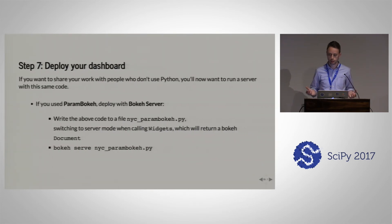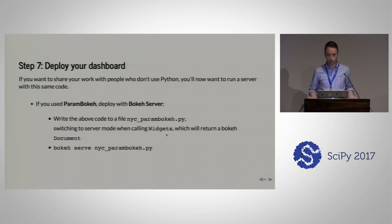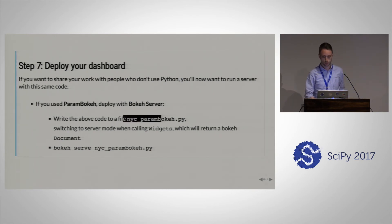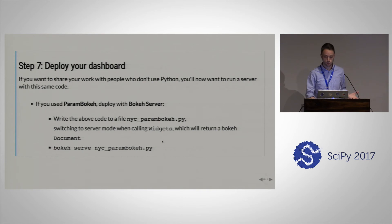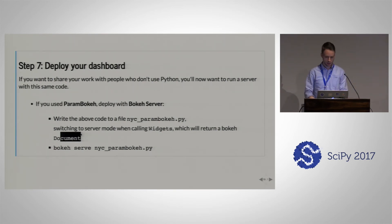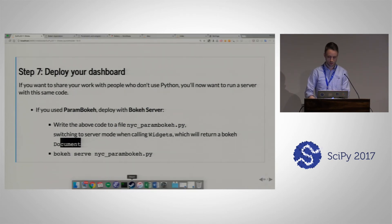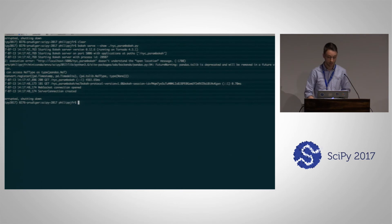Now we have this whole complex dashboard and we want to deploy it. Using ParamBokeh, we can do so really simply by just dropping this class and these various calls into a script file. The widgets function we used has a mode parameter we can change; in server mode, it will return a Bokeh document, which means we can deploy it as a Bokeh app. And you'll remember the talk's title promised one billion points — so far we've just seen 12 million — so we'll actually use a different dataset.